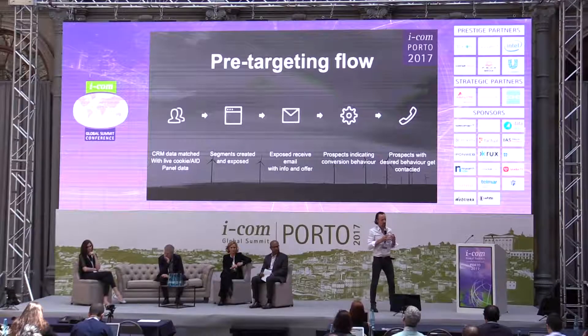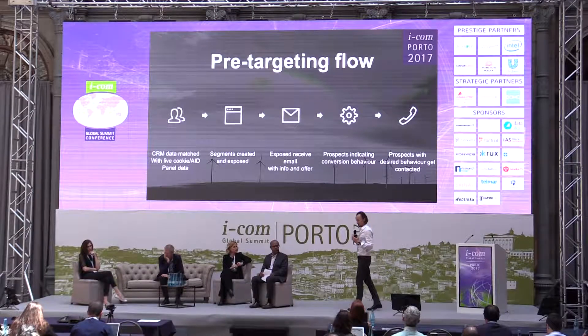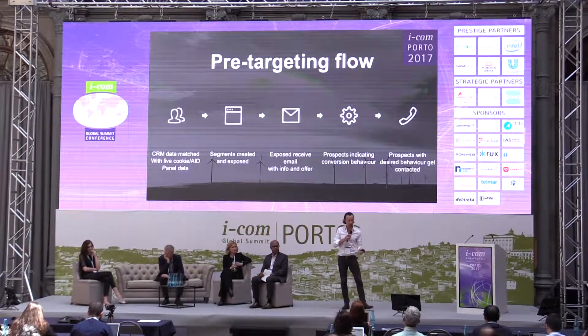We created a solution for them where we basically did a fragmented pre-targeting flow using banners, pre-rolls, and email messages, done cross-device based on their status in the CRM database. We took the CRM database, matched it with our live panel, and found the overlap — about 60%, so around 300,000 people we could see in our panel. We created a couple of segments: one house owner segment and one segment for gas for your stove and for heating in the house.